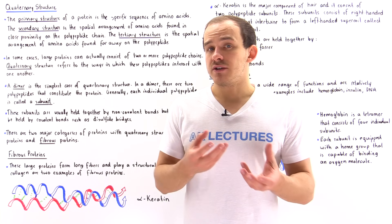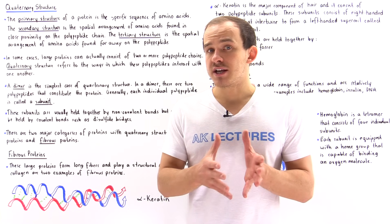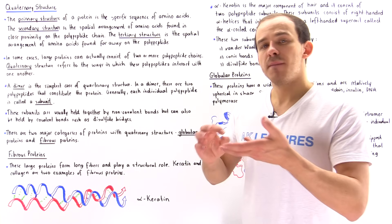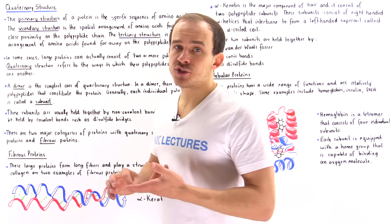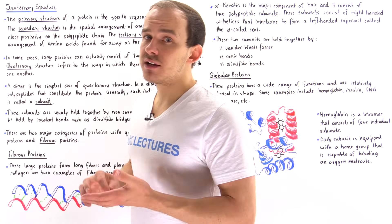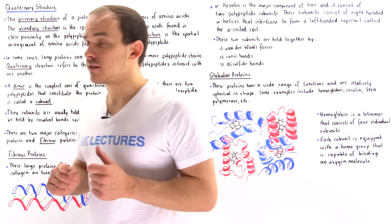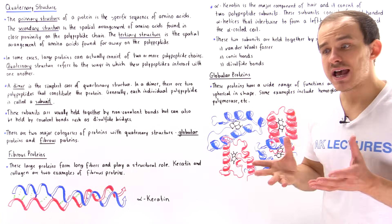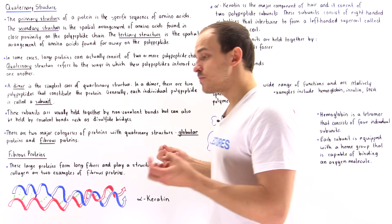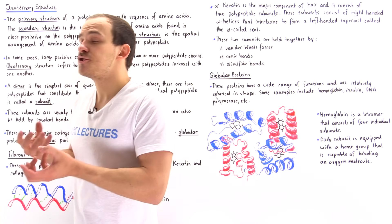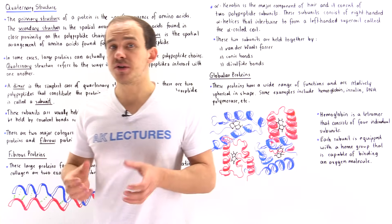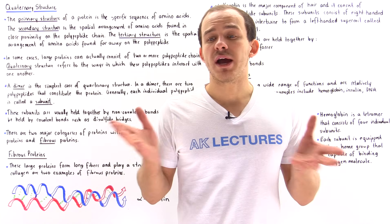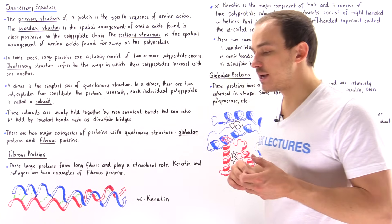Secondary structure consists of regular patterns we call alpha helixes, beta pleated sheets, beta turns, and omega loops. And in the previous lecture we discussed tertiary structure, which is the spatial arrangement of amino acids that are found far away from one another on that polypeptide chain.